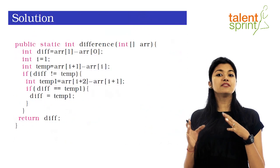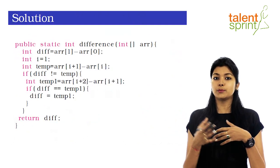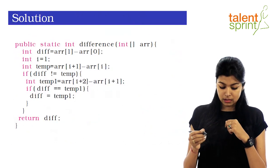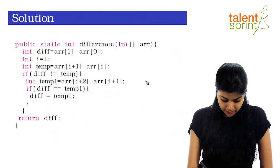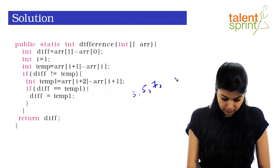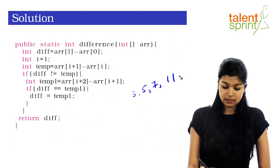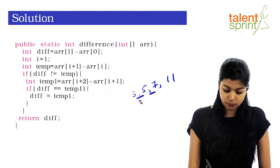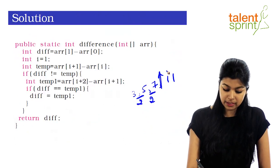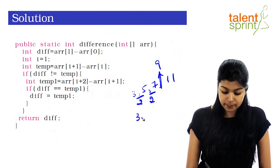This is the function 'difference' that takes the array — the arithmetic progression — as an input parameter and returns the difference. For example, we have the series 3, 5, 7, and 11. As you can see, the difference between consecutive elements is 2, so the missing element would be 9.